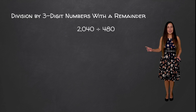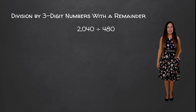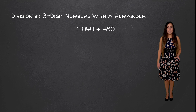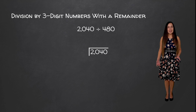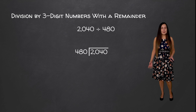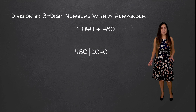And now we're going to do our next example, which is 2040 divided by 480. We're going to set this up using long division. That means 2040 goes on the inside since that's our dividend, and 480 goes on the outside since that's our divisor.